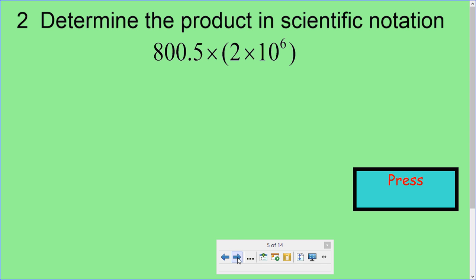Our next question says, determine the product in scientific notation. Product is the answer to multiplication. We have to multiply 800.5 times 2 times 10 to the sixth power, and then put it into scientific notation. Let me take on 800.5 times 2. That'll give me, well, 800 times 2 is 1600, and 0.5 times 2 would give me 1. So if I add that up, that'll give me 1601. So I'd have 1601 times 10 to the sixth power.